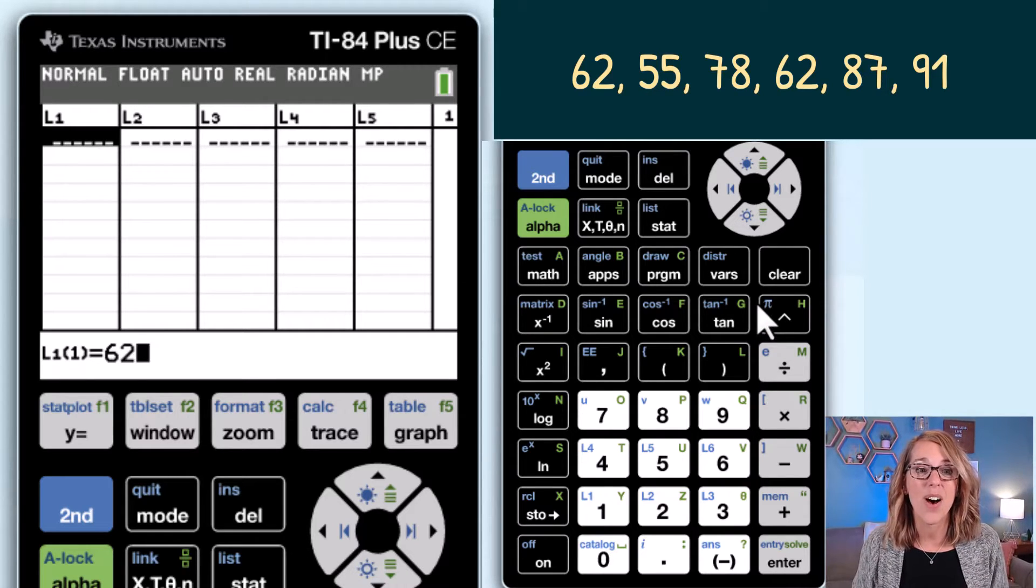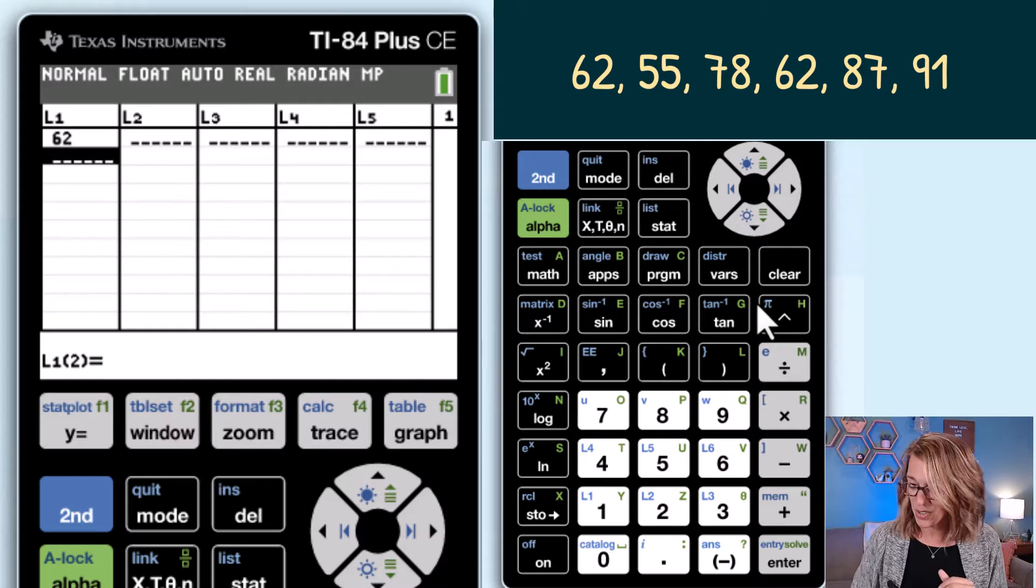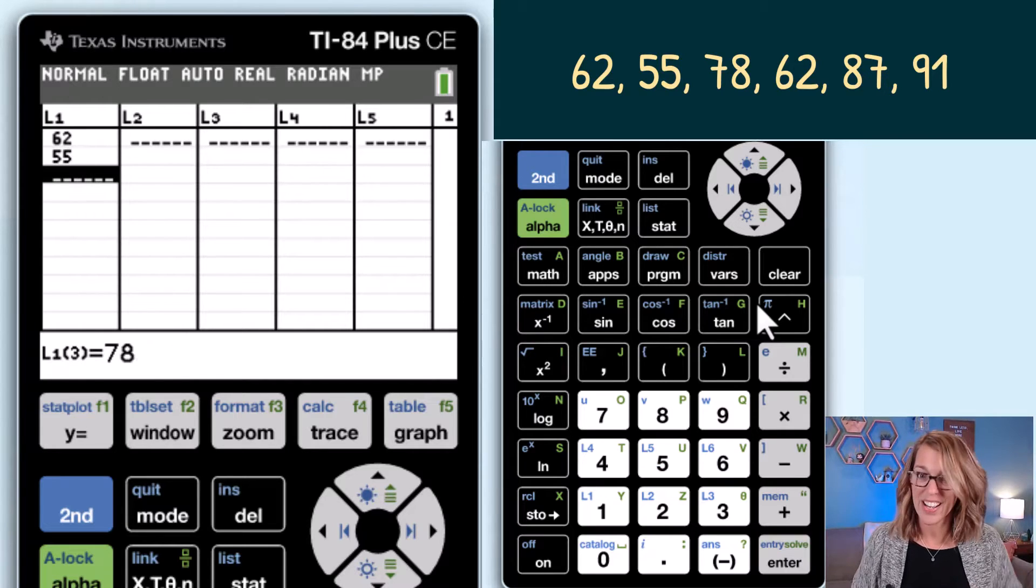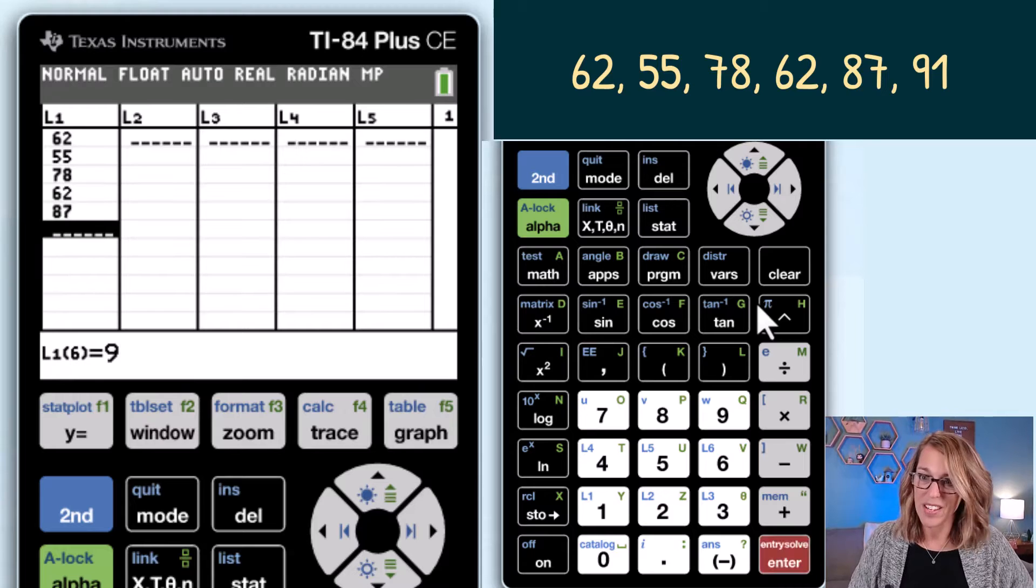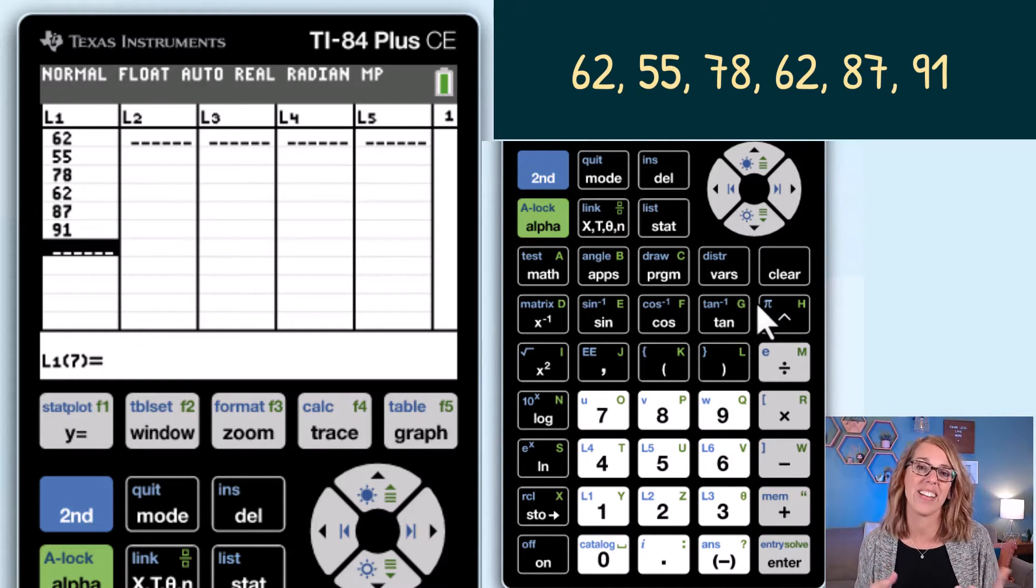Once you've got an empty list you're ready to type your data in. I'm going to go ahead and type my data followed by enter. So 62 enter, 55 enter, 78 enter, 62, 87, and 91. Once I've got all of my data in here I'm ready to get to those statistical measures.